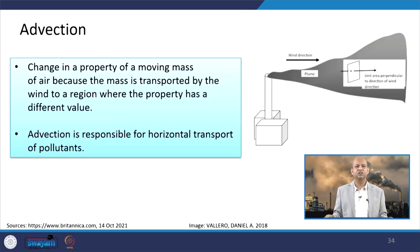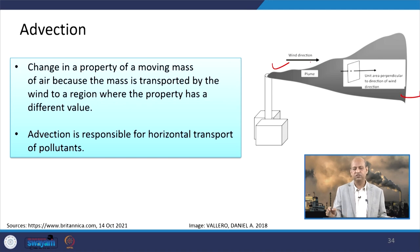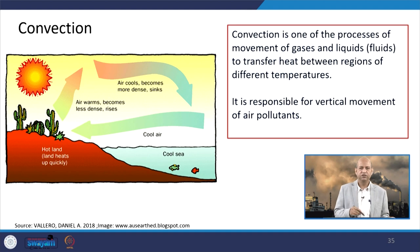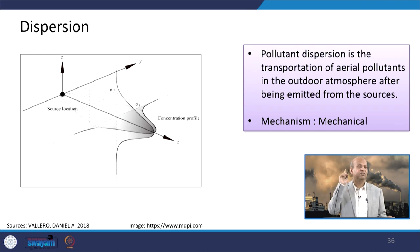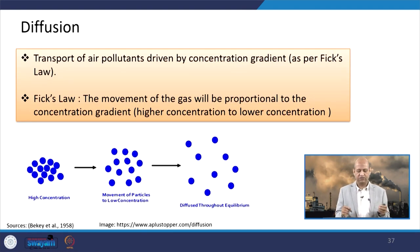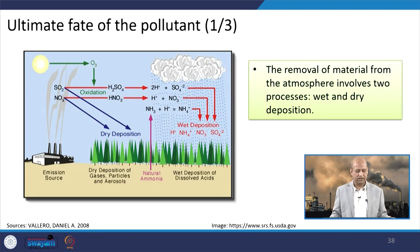Advection is nothing but change in a property of a moving mass of air because the mass is transported by the wind to a region where this property has a different value. The horizontal movement or transport of the pollutants from one point to another — this is the advection process. Convection, as you know, is vertical movement — basically the process of movement of gases and liquids like fluids due to heat transfer, causing vertical movement. This vertical movement is suppressed in inversion conditions. Dispersion happens because of turbulence and wind movement, and diffusion is basically when different molecules interact with each other and movement from high concentration to low concentration occurs — that is the diffusion process of diluting highly concentrated pollutants.